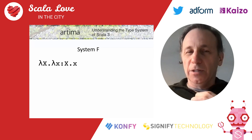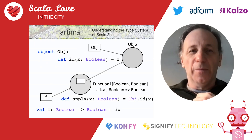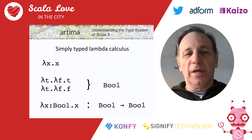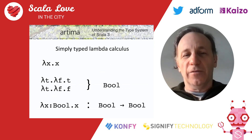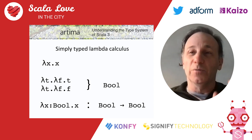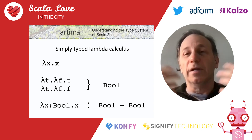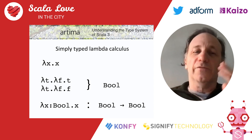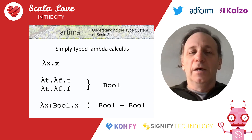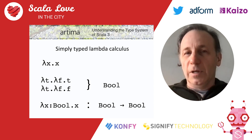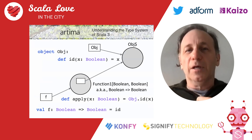One issue with simply typed lambda calculus is verbosity. The expression lambda x colon bool dot x is the identity function for booleans, but I can only use it for booleans. If I want one for natural numbers, I have to write it again — lambda x dot nat dot x. If I want one for strings, lambda x dot string dot x. That's tedious. So another language built on top of simply typed lambda calculus, called System F, adds abstraction over types.